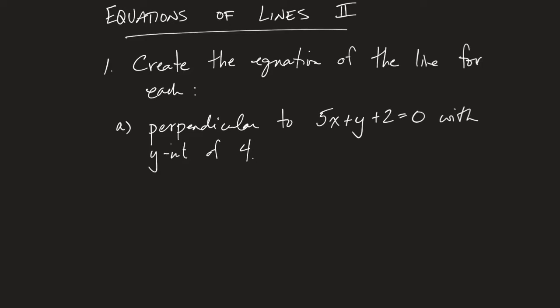I want to spend the first two problems today giving ourselves a little bit of feedback as to how well the previous day went. So I'd like you to copy down the instruction: question one, create the equation for the line for each. In problem A, you need to come up with the equation of the line that is perpendicular to 5x plus y plus 2 equals 0 with a y-intercept of 4.